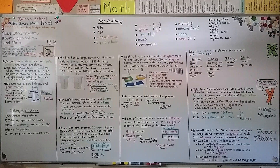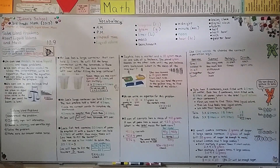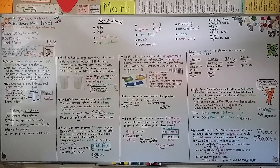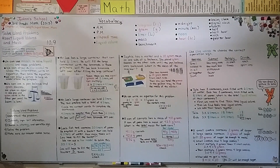Remember when solving word problems to make sure you understand what you're looking for and that your answer makes sense, and use clue words to help choose the correct operation sign. This is the end of chapter ten. Our next lesson starts chapter eleven, all about perimeter and area. I hope you're having a great day — see you next time!